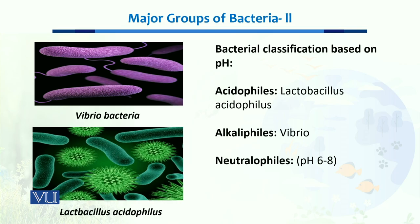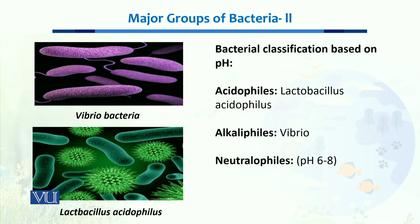Then we have alkaliphiles; Vibrio is the best example, which is a kind of bacteria present in the large and small intestine of humans. Then we have neutrophiles — bacteria that neither live in an acidic environment nor in an alkaline or basic environment. These bacteria live in a pH range from six to eight.